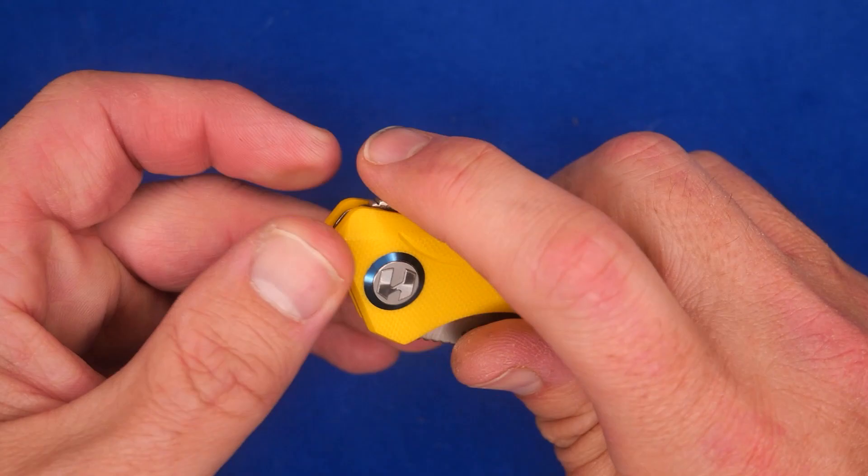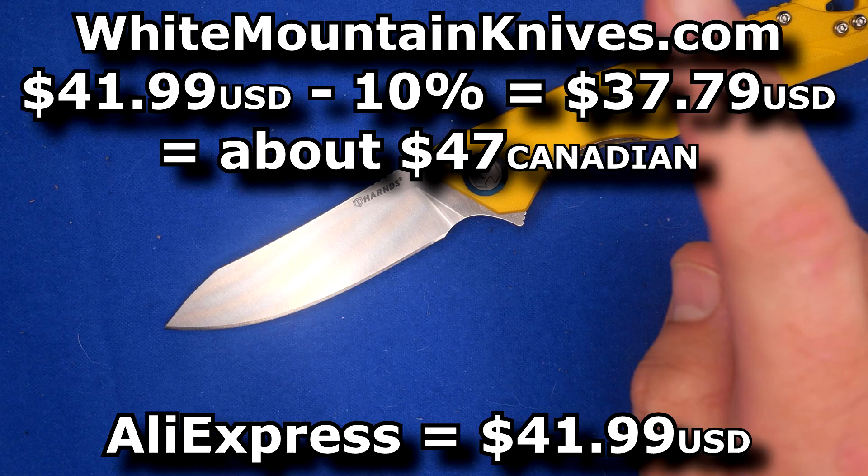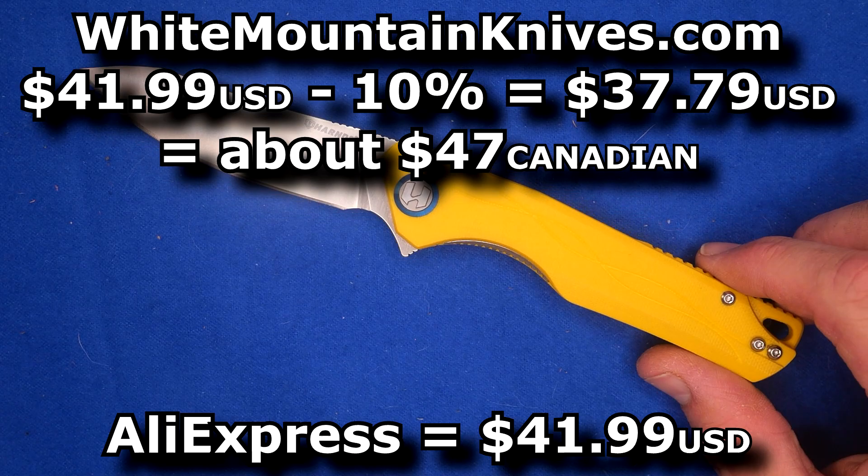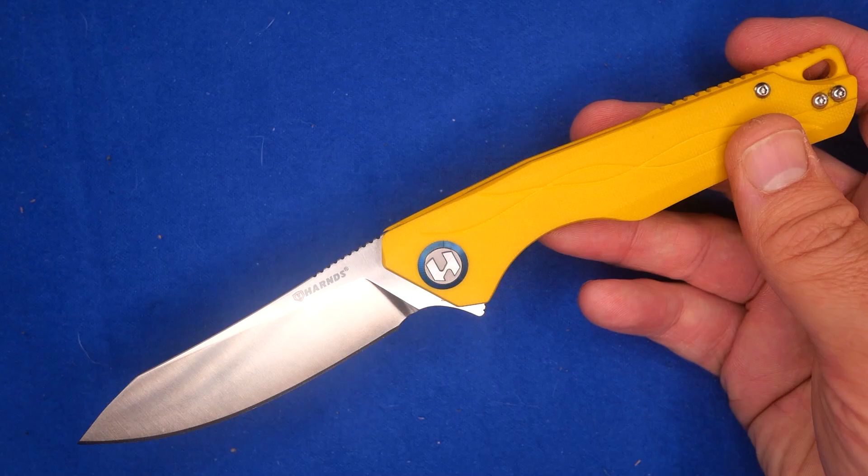How much does this thing cost? $41.99 US at White Mountain Knives. That's not bad at all. You save your 10% with coupon code CCE, and now it's $37.97. So just under 38 American dollars. That's about 47 Canadian dollars. I think this is a good buy. Most of Hearn's knives are really good buy. They do unique stuff.